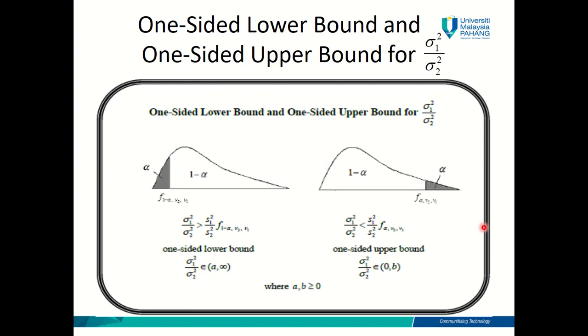Assalamualaikum and good day everyone. Hi, it's Miss Zaheerah again and as promised, this is my part 2 for chapter 2.7 where I'll show you how you can find the confidence interval for one-sided lower bound and one-sided upper bound for the case of ratio for two population variances.